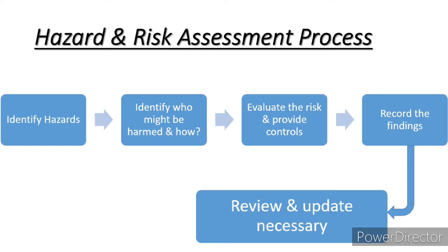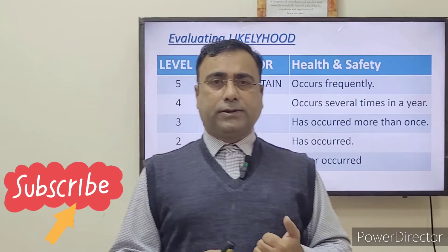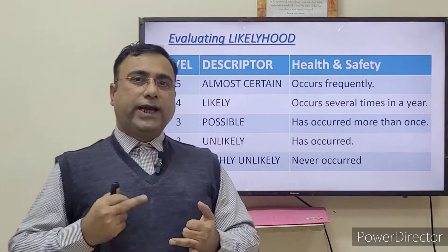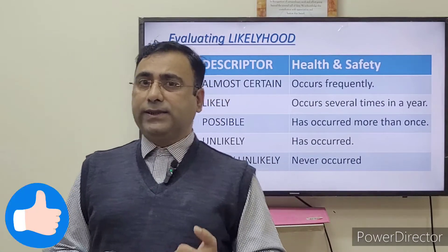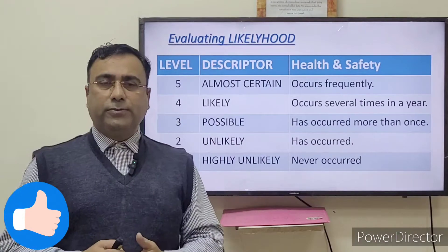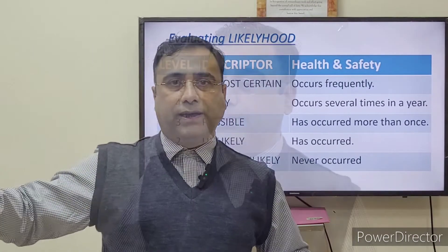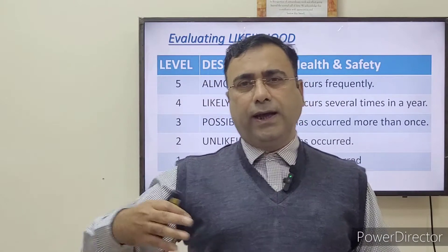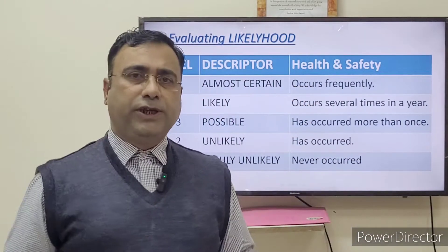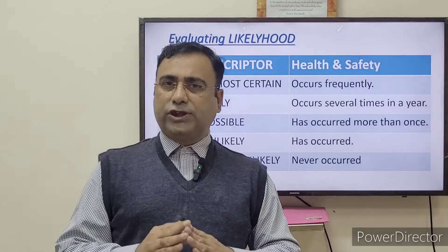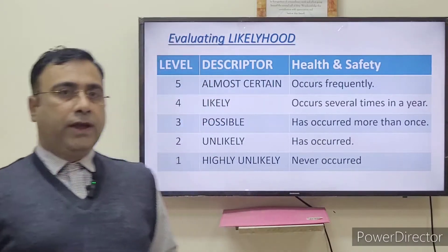For the likelihood scale: number 5 means almost certain — the hazard will almost certainly occur. Number 4, likely, means it may occur or has occurred several times in a year. Number 3, possible, means it has occurred once or more than once. Number 2, unlikely, means it has occurred but not in the near past — it happened somewhere in the long run. Number 1, highly unlikely, means there is a possibility of harm but it has never happened.